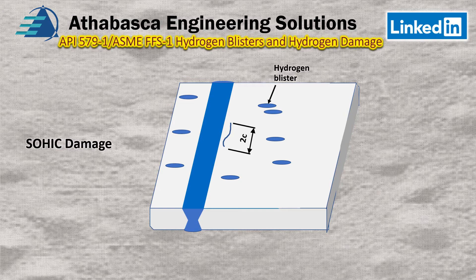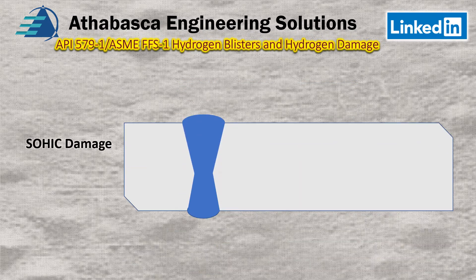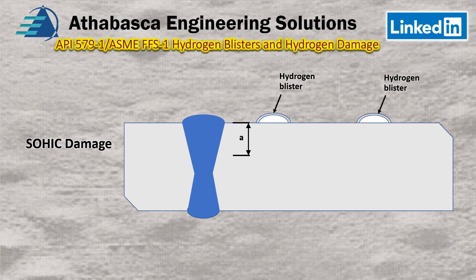The length of the crack-like flaw should be established using applicable NDE methods, which we'll get into in a moment. If a series of crack-like flaws are present, the individual flaws should be combined in accordance with the interaction procedures in part nine. In the cross-section SOHIC damage view, dimension A is the depth of the crack. In the previous slide we had 2C, which was the length of the crack. The length of the hydrogen blister is characterized by LSH — that's basically some of the terminology required to do the analysis.